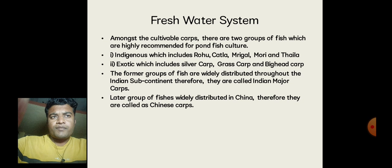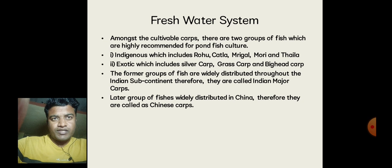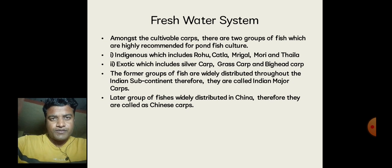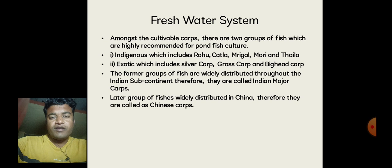Amongst the cultivable carps, there are two groups of fish which are highly recommended for pond fish culture. The first group is indigenous, which includes Rohu, Catla, Mrigal, Mori and Thalia species. The second group is exotic, which includes Silver Carp, Grass Carp and Bighead Carp.